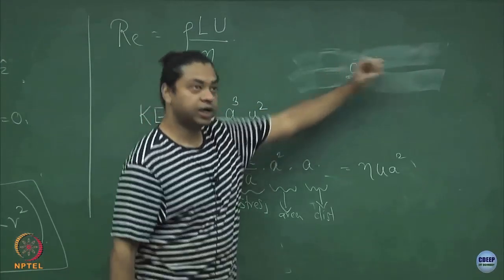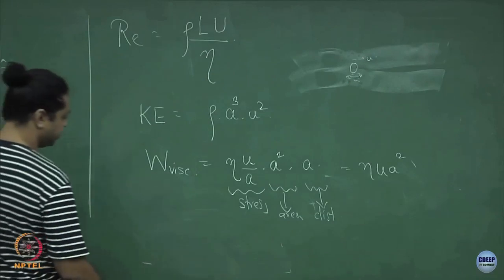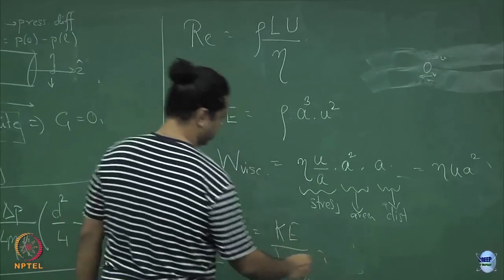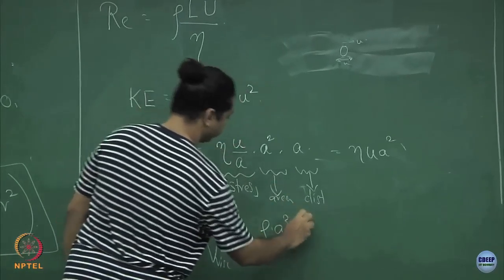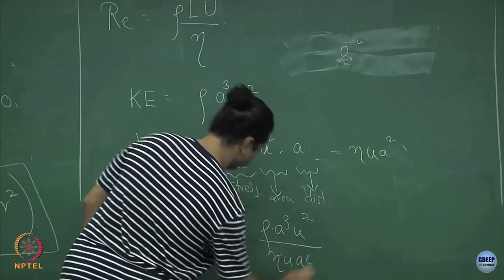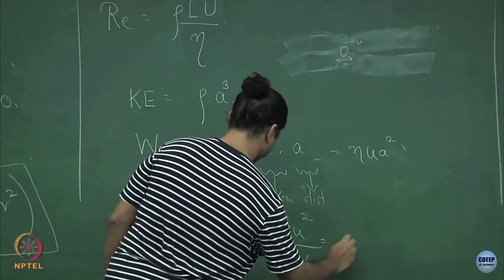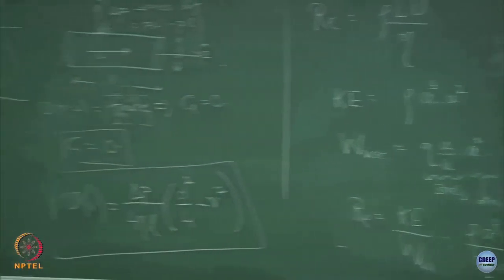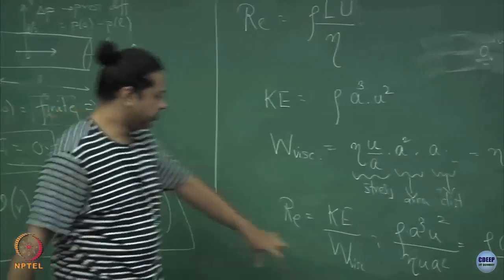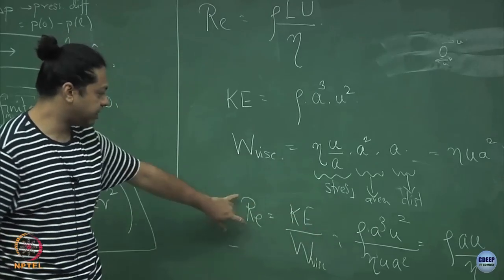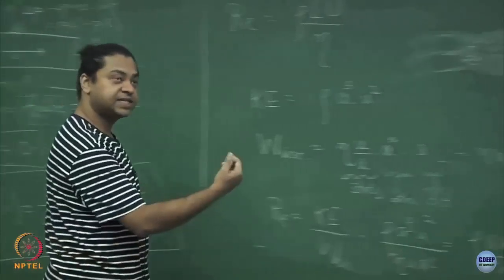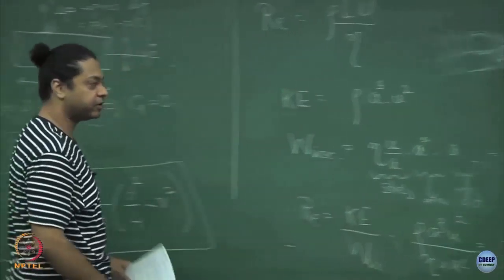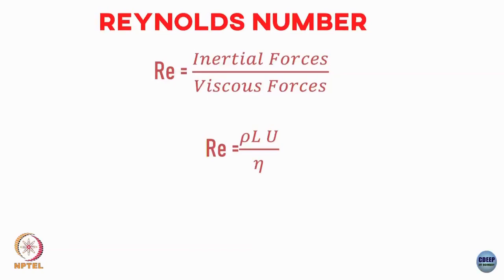Taking the ratio of kinetic energy to viscous work: (ρa³u²)/(ηua²) = ρau/η, which is again the Reynolds number. If the viscous work is much larger than the kinetic energy — i.e., Reynolds number is very small — the viscous drag will quickly dissipate the kinetic energy. The parcel will move only a little bit before viscous drag dissipates all its kinetic energy. That is the low Reynolds number limit.